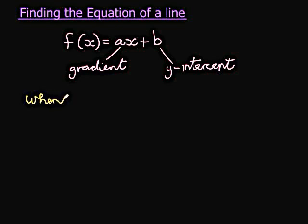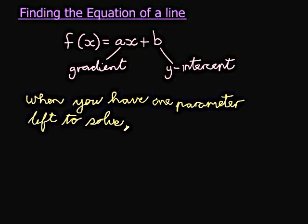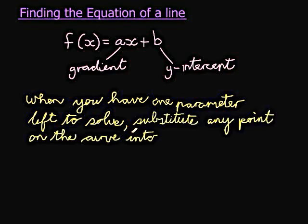When you have one parameter left to solve, all you need to do is substitute any point on the curve into f(x). In other words, into the y-value we substitute the y-coordinate of that point, and into the x-value we'll substitute the x-value of that point.